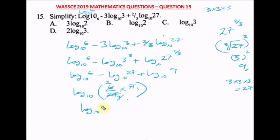Combining using log laws: log(6 × 9 / 27) = log(54/27) = log 2 base 10. Our right option is option B.